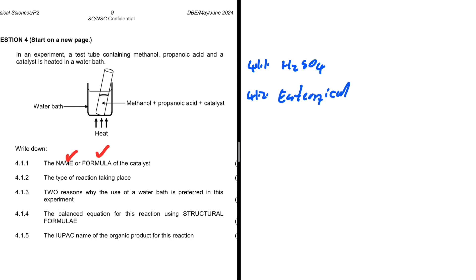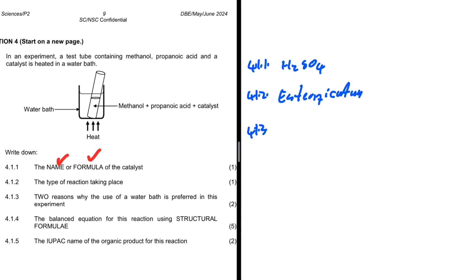Then 4.1.3: two reasons why the use of a water bath is preferred in this experiment over direct heat. One of the reasons is because alcohol is extremely flammable. So that is one reason why we use a water bath over putting the reactions on heat themselves.